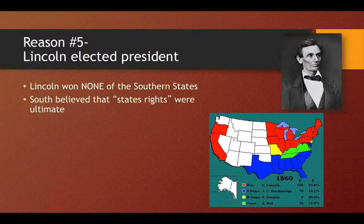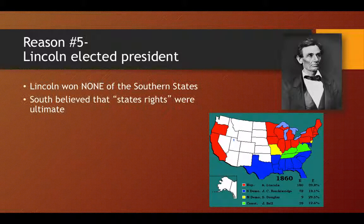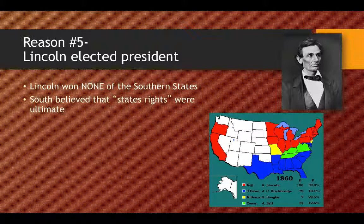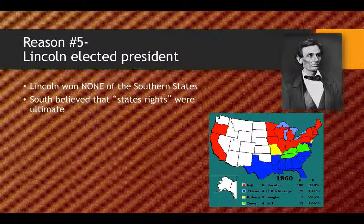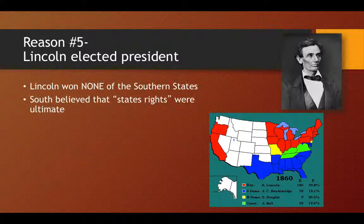It's interesting because the South believed that states' rights were more important than federal power. So if there's a conflict — the state wants to do something but the federal government wants the state to do something else — Southerners believed that the states ultimately have more authority and can make that decision. The issue we've been talking about is slavery. The federal government was saying we're going to have to get rid of slavery eventually, and the South was so concerned about that they said no. Eventually they're going to break off and create their whole new country.